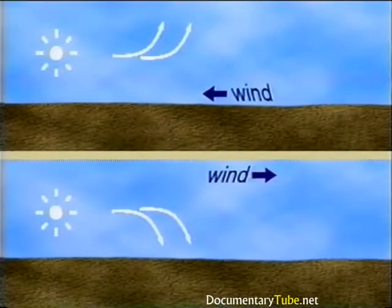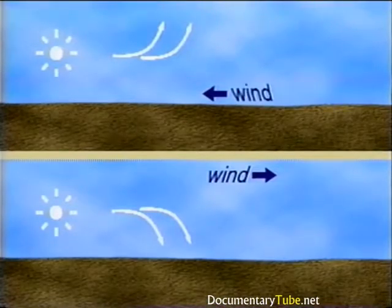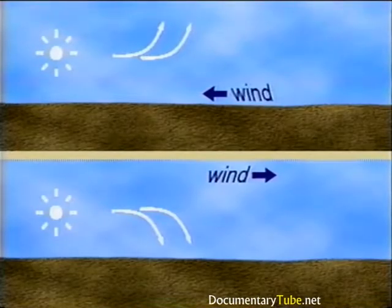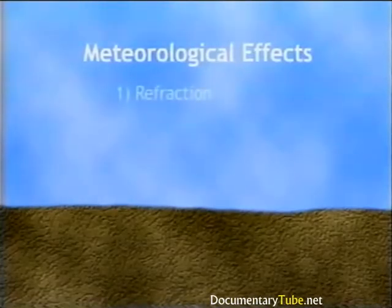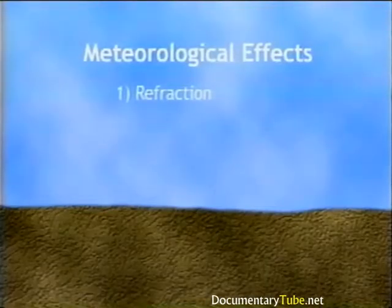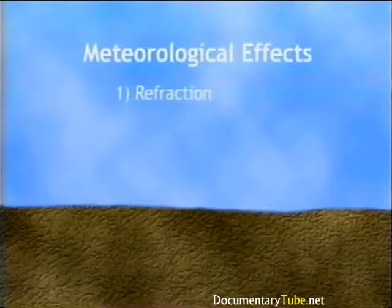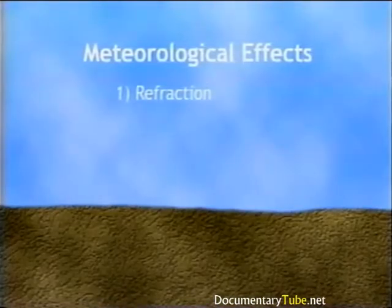Besides refraction due to temperature gradients, wind can also cause sound to deviate from a straight path. When sound propagates upwind, ray paths curve upward as with a temperature lapse, decreasing the received noise level. When sound propagates downwind, ray paths curve downward as with temperature inversion, increasing the received noise level. Sound may reach the receiver with greater intensity if refracted downward, and with less intensity if refracted upward. While atmospheric conditions can have major effects on propagation over distances greater than about 100 meters (300 feet), typical highway studies are performed within 100 meters of the highway where meteorological effects are less severe.